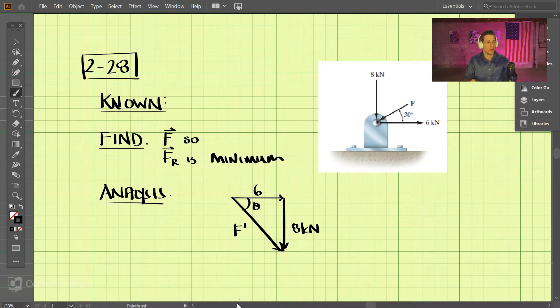So the magnitude of F prime is going to be the Pythagorean theorem: 6 squared plus 8 squared, and take the square root of the sum of those.